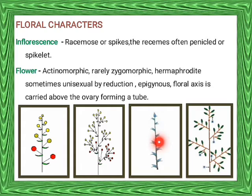Fourth image: the spikelet inflorescence. Here we can see many spikes present on the main axis. This type of inflorescence is usually found in grass species, with one or more florets enclosed in the bract.